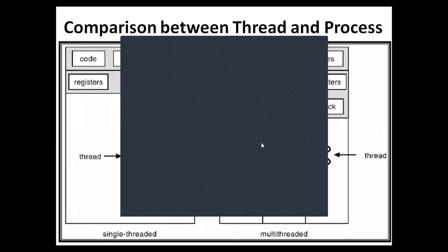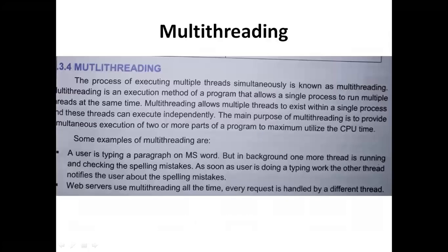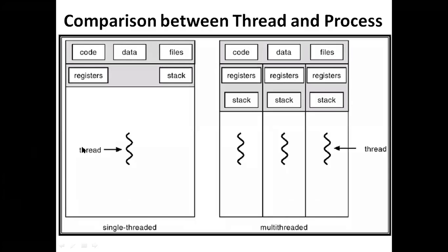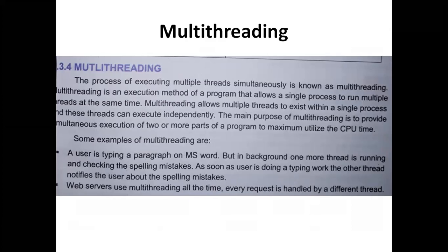Now we move on to multithreading. Multithreading is an execution method of a program that allows a single process to run multiple threads at the same time, as we have seen in the previous diagram — one process with one thread versus multiple threads. The basic purpose is that CPU utilization is maximized so that things can be independently run and separated.